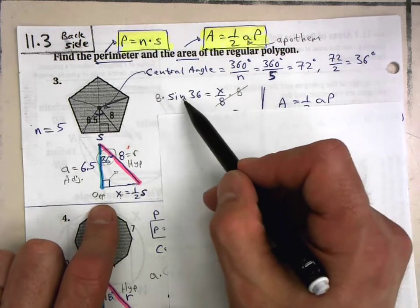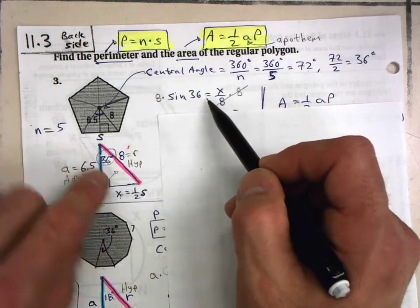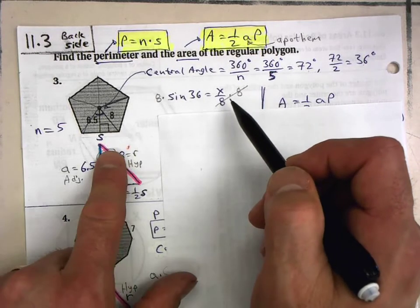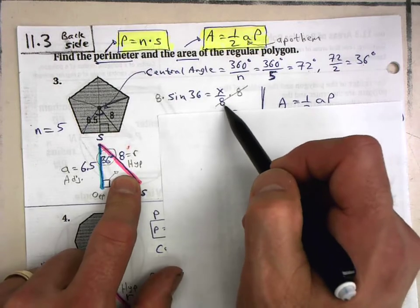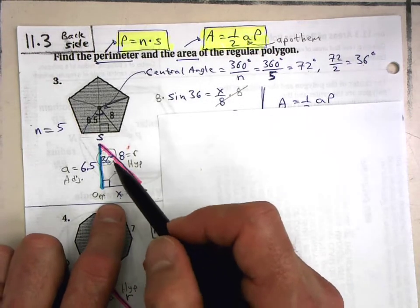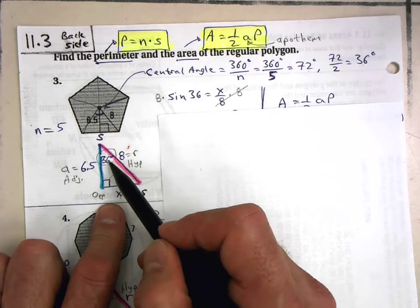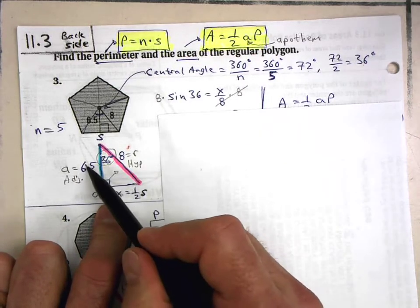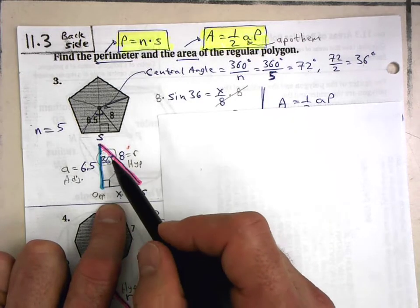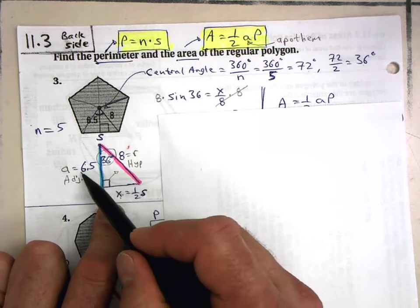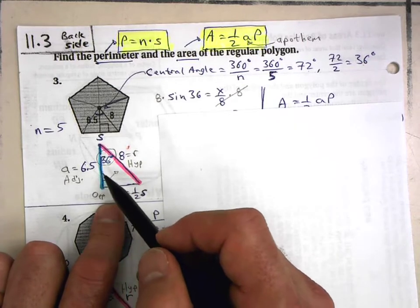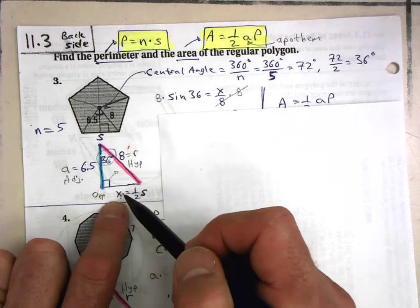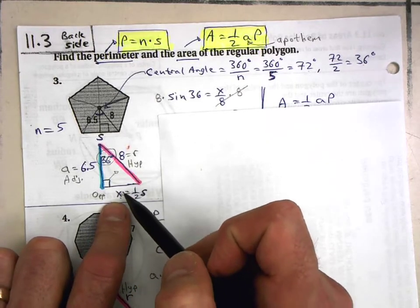You could also use tangent: tangent of 36 equals X over 6.5, and you'd get the same answer. But I'm using sine because that's what people are typically more familiar with. So sine of 36 equals X over 8. I want to solve for X, so multiply both sides by 8: X equals 8 times the sine of 36.